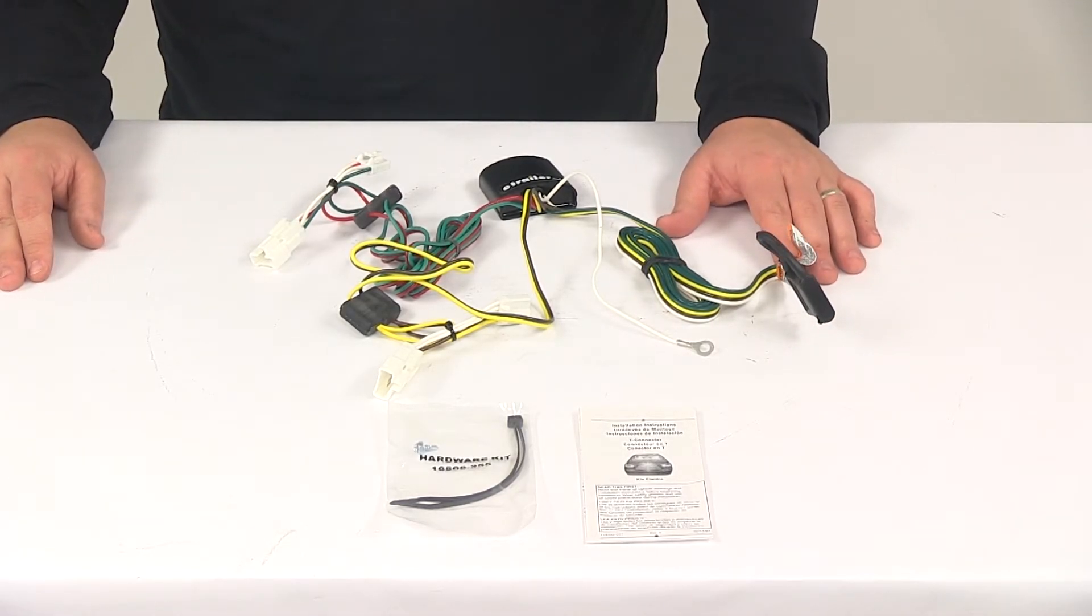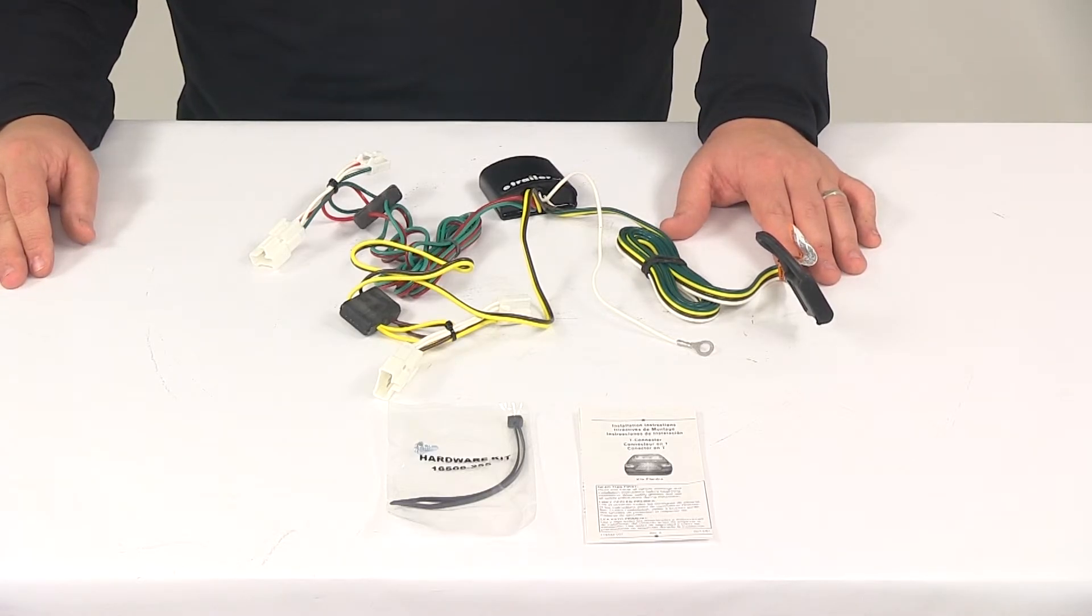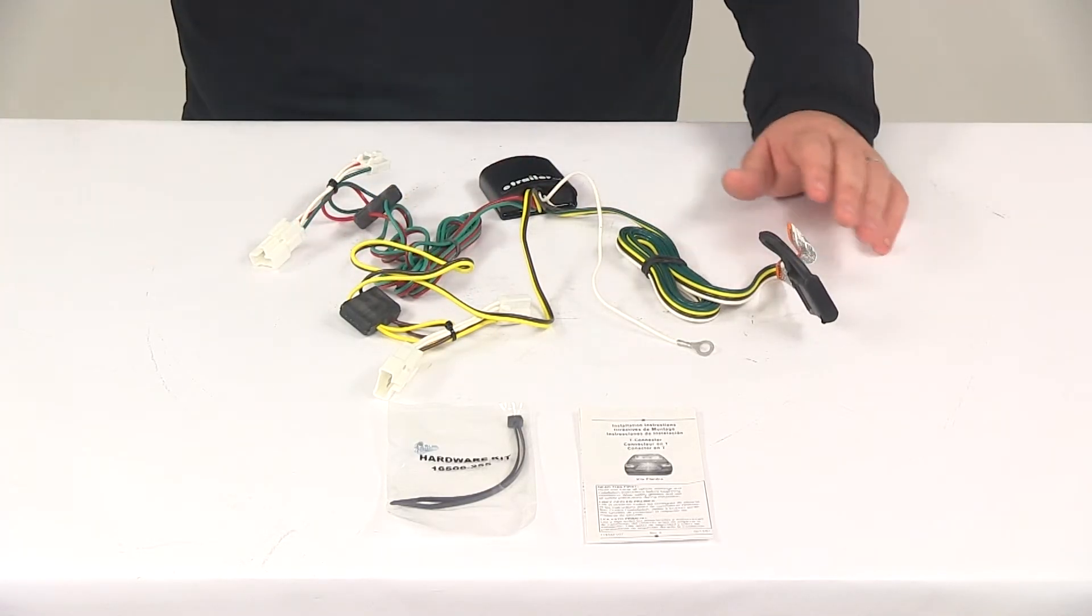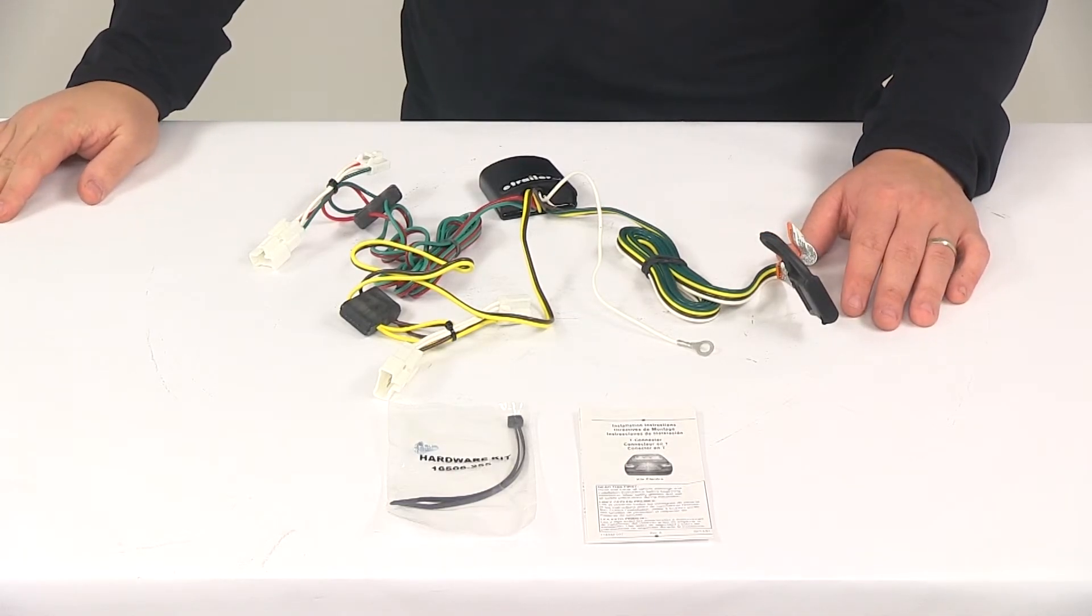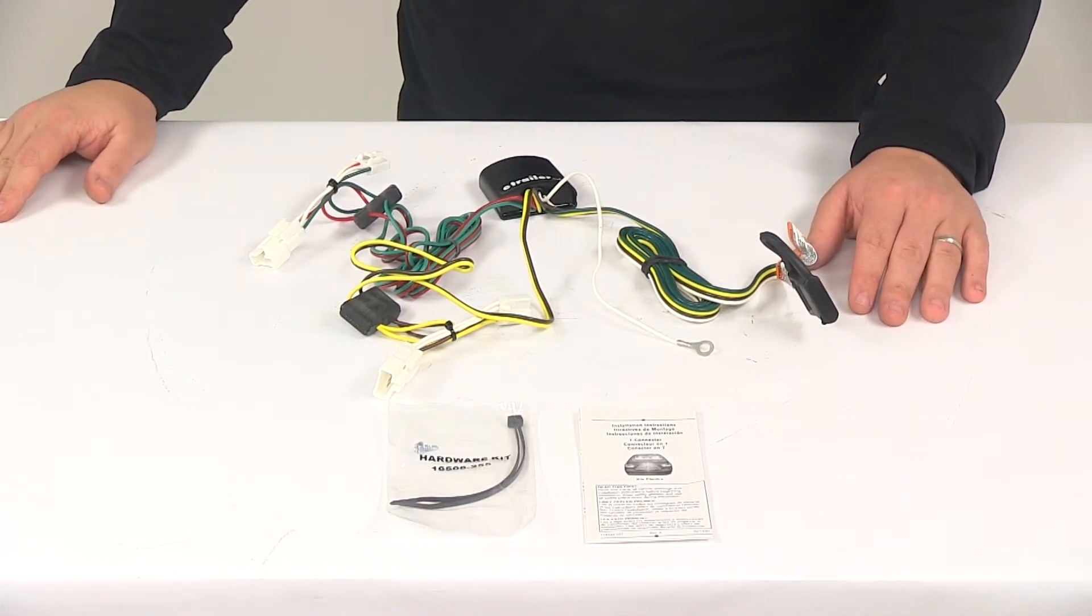It's also recommended that you use a small amount of dielectric grease on all your electrical connections like the plugs on the vehicle and the four-pole connector itself. That grease helps prevent corrosion to the connection points. It's sold separately and you can find it at eTrailer.com.